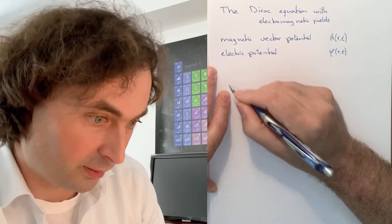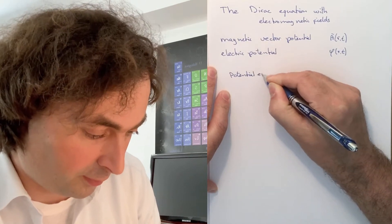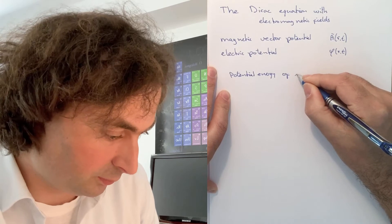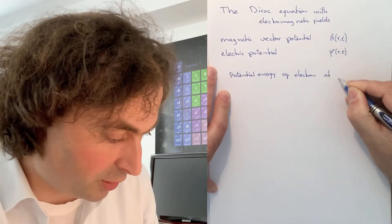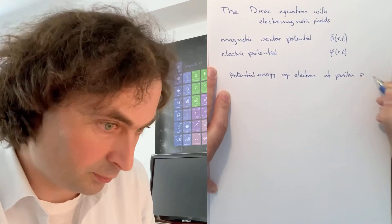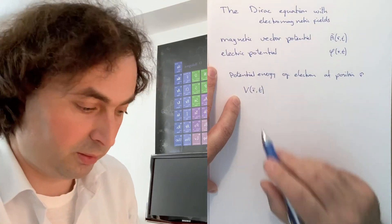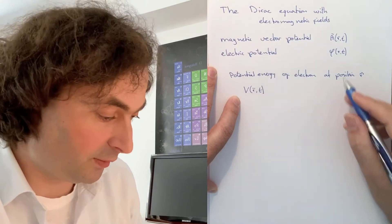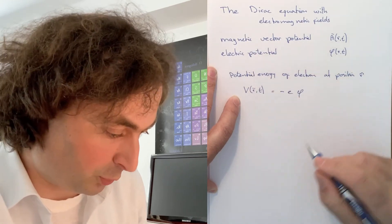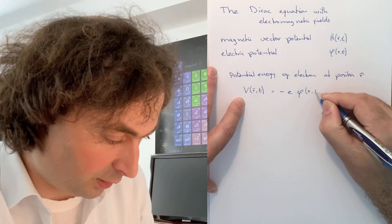Now we can express the potential energy of an electron at position r. Your potential energy as a function of position and time is given as minus e times the electric potential, V(r,t).